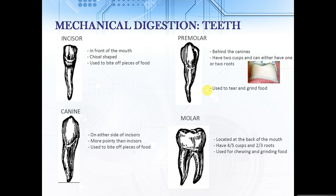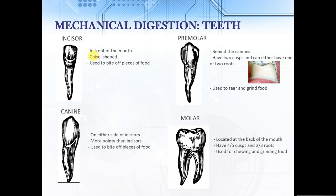Now of course for mechanical digestion, the first thing that we should think of is our teeth. We have four different types of teeth in our mouths, and the first one is incisors, which are located in the very front of our mouths. They have a chisel-shaped structure and we use these to bite off pieces of our food.